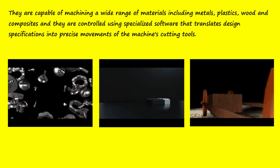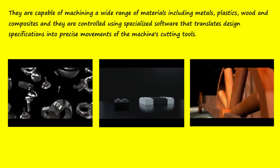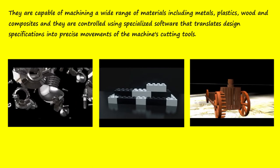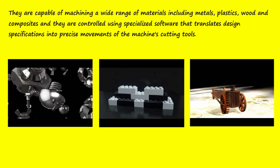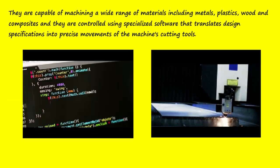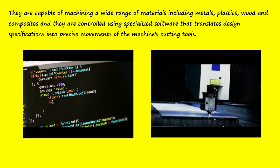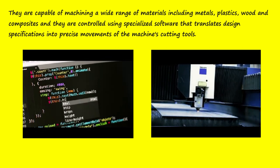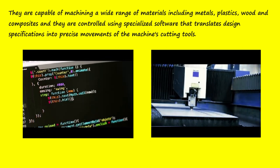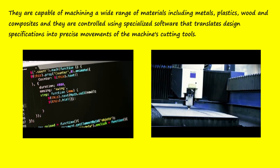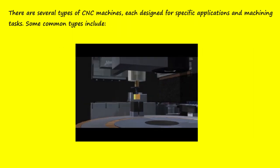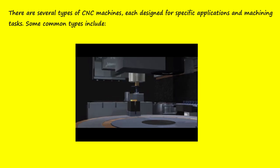They are capable of machining a wide range of materials, including metals, plastics, wood, and composites. They are controlled using specialized software that translates design specifications into precise movements of the machine's cutting tools. There are several types of CNC machines, each designed for specific applications and machining tasks.